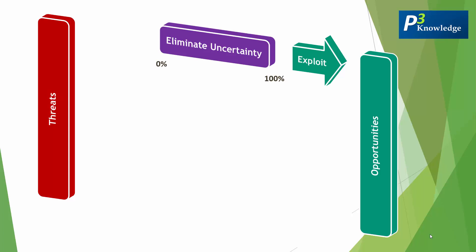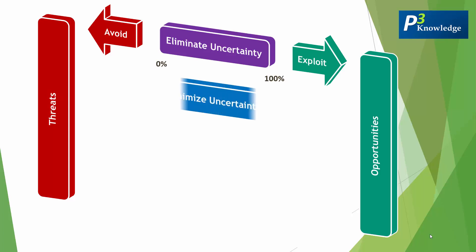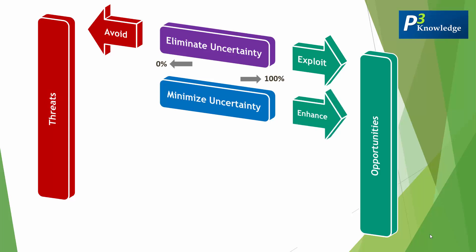And when we're trying to make a threat 0%, it's called avoid. The second principle is to minimize the uncertainty — trying to make the uncertainty closer to being a certainty by driving the probability toward 100% or toward 0%, but not reaching either. In the case of opportunities, it's called enhance, and in the case of threats, it's called mitigate.